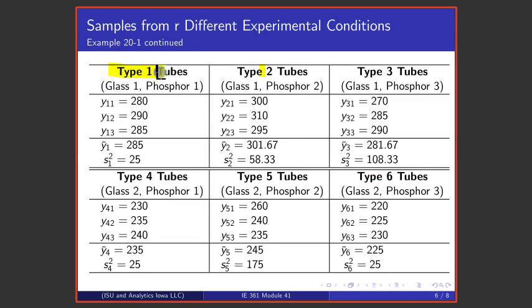Tests on three tubes of each type produce current requirements in the following table. So here is tube type 1, type 2, type 3, type 4, type 5, and type 6. Sure enough, types 1, 2, and 3 have glass number 1, while types 4, 5, and 6 have glass number 2. Types 1 and 4 have phosphor 1, types 2 and 5 have phosphor 2, and types 3 and 6 have phosphor 3.